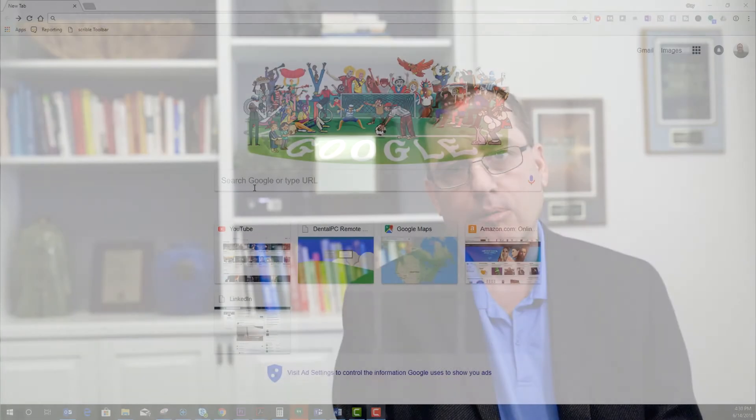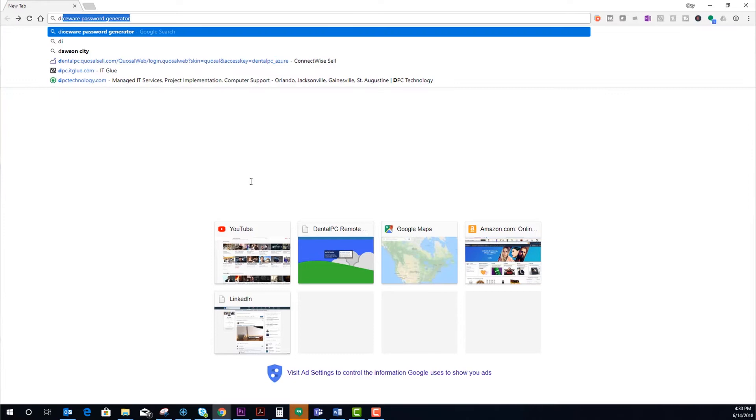Well, we recommend a two-tiered approach. The first tier is to have a strong master password. To create a strong master password, we recommend a program called Diceware. It's not really a program. It's a website. It's a process. I'm sharing a link in the description below on how you can find a Diceware generator that you can use.